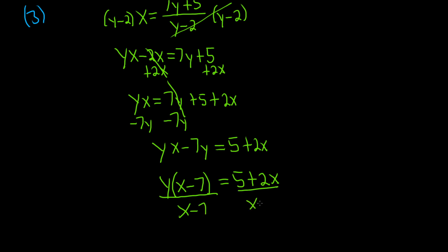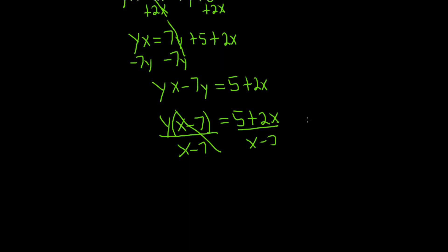Boom. Beautiful stuff. Gone. It cancels. That's a really ugly 7. So we have y equals 5 plus 2x over x minus 7.